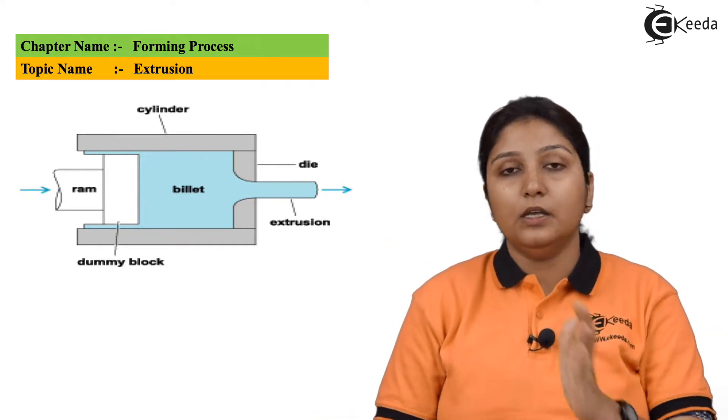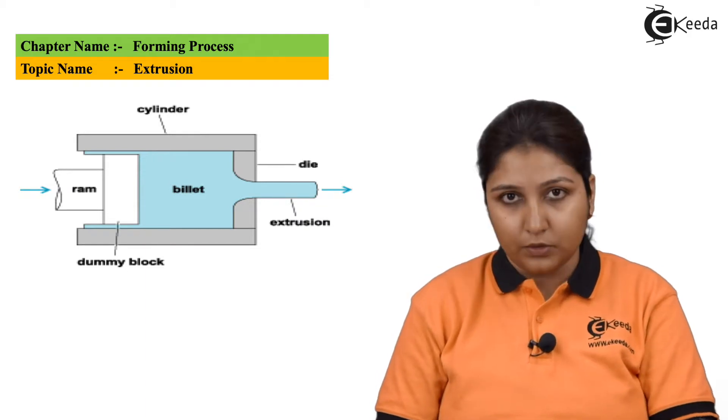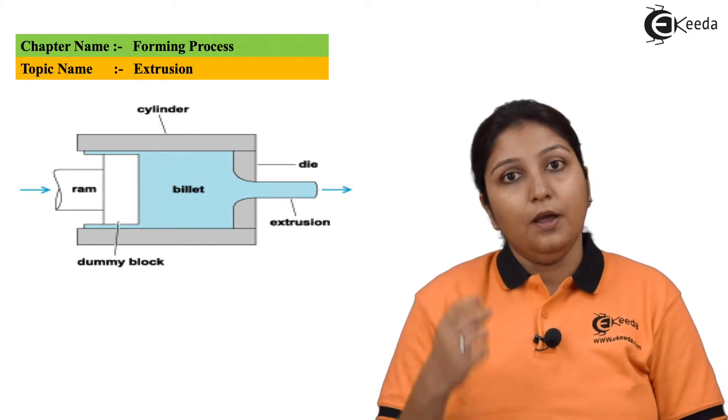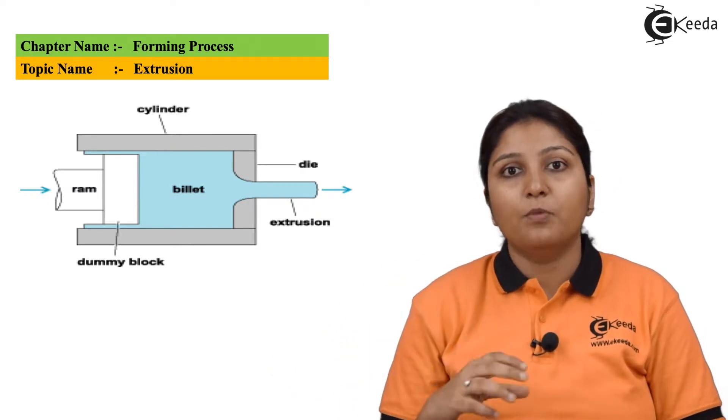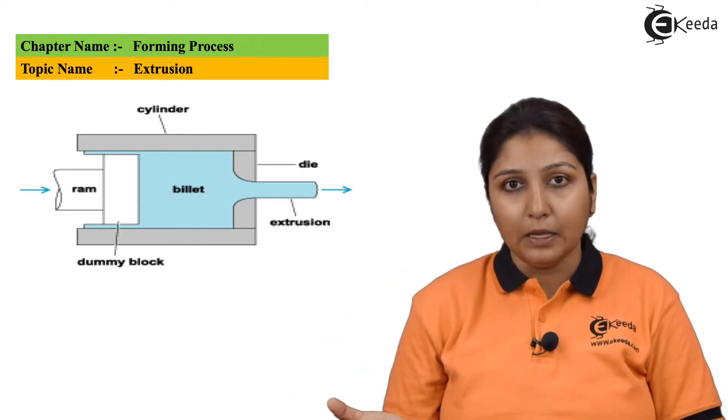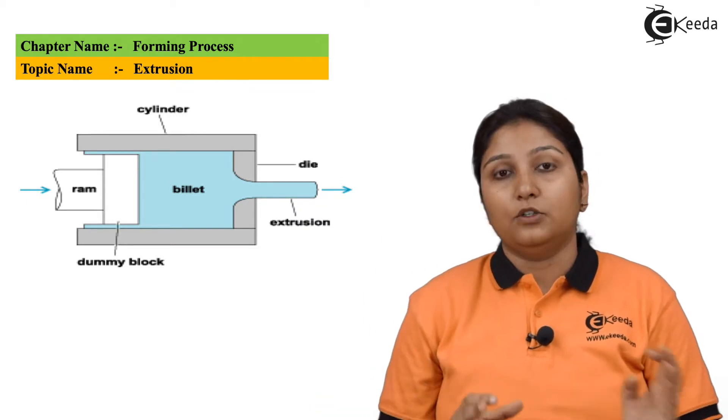This is the exact extrusion process. In extrusion, material is extracted and comes out in the form of a rod or pipe through an opening by the action of push or pull.